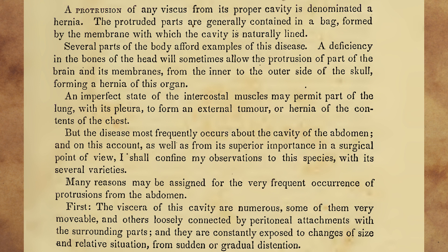But the disease most frequently occurs about the cavity of the abdomen, and on this account, as well as from its superior importance in a surgical point of view, I shall confine my observations to this species, with its several varieties. Many reasons may be assigned for the very frequent occurrence of protrusions from the abdomen. First, the viscera of this cavity are numerous, some of them very movable, and others loosely connected by peritoneal attachments with the surrounding parts, and they are constantly exposed to changes of size and relative situation, from sudden or gradual distention.